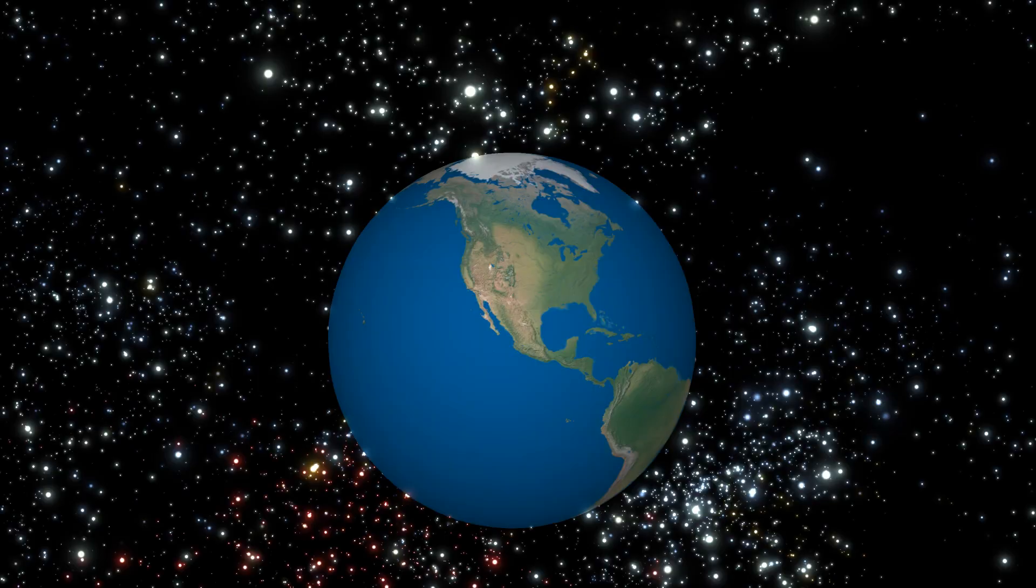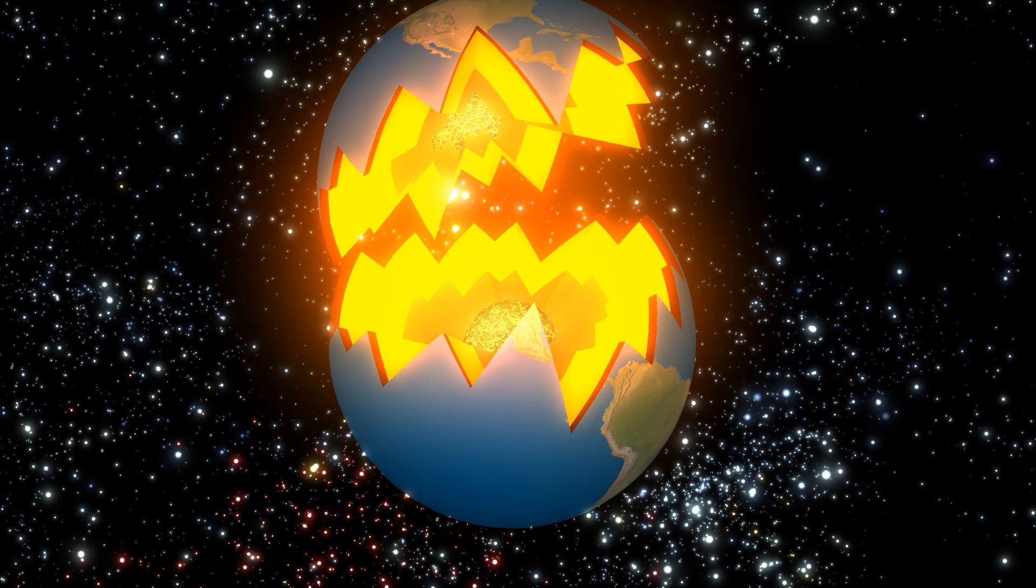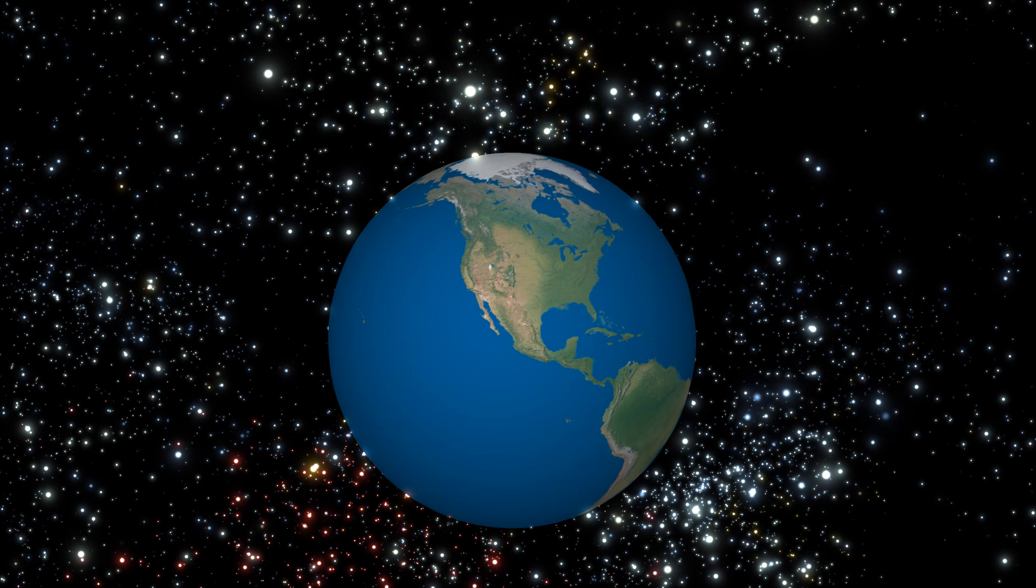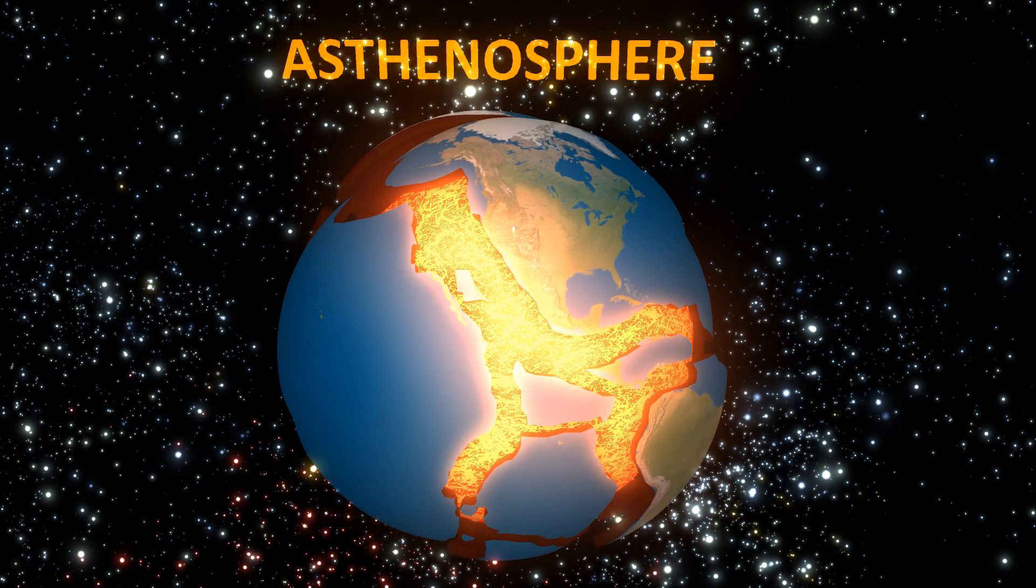Our planet may look solid, but if you could crack it like an egg, you'd find it's quite fluid inside. The solid shell, the lithosphere, is cracked and broken up into tectonic plates that scoot on top of a more fluid layer, the asthenosphere.